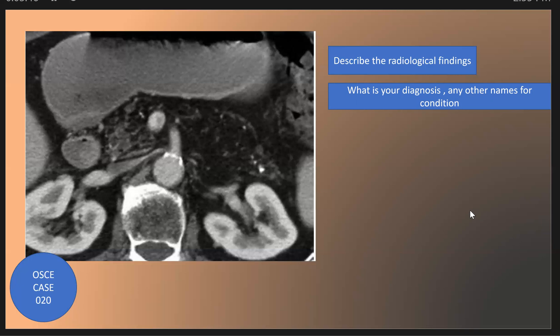The next question: what are the subtypes of pancreatic lipomatosis or fatty pancreas? We have even pancreatic lipomatosis and uneven pancreatic lipomatosis. The uneven pancreatic lipomatosis can be subclassified into three types.